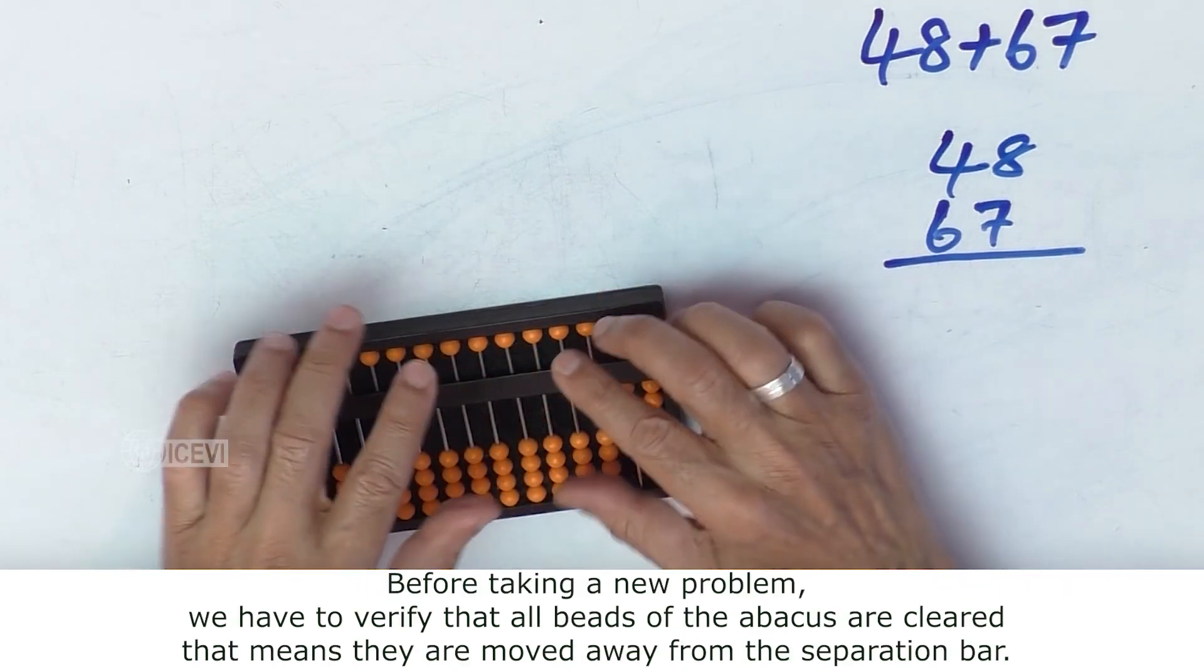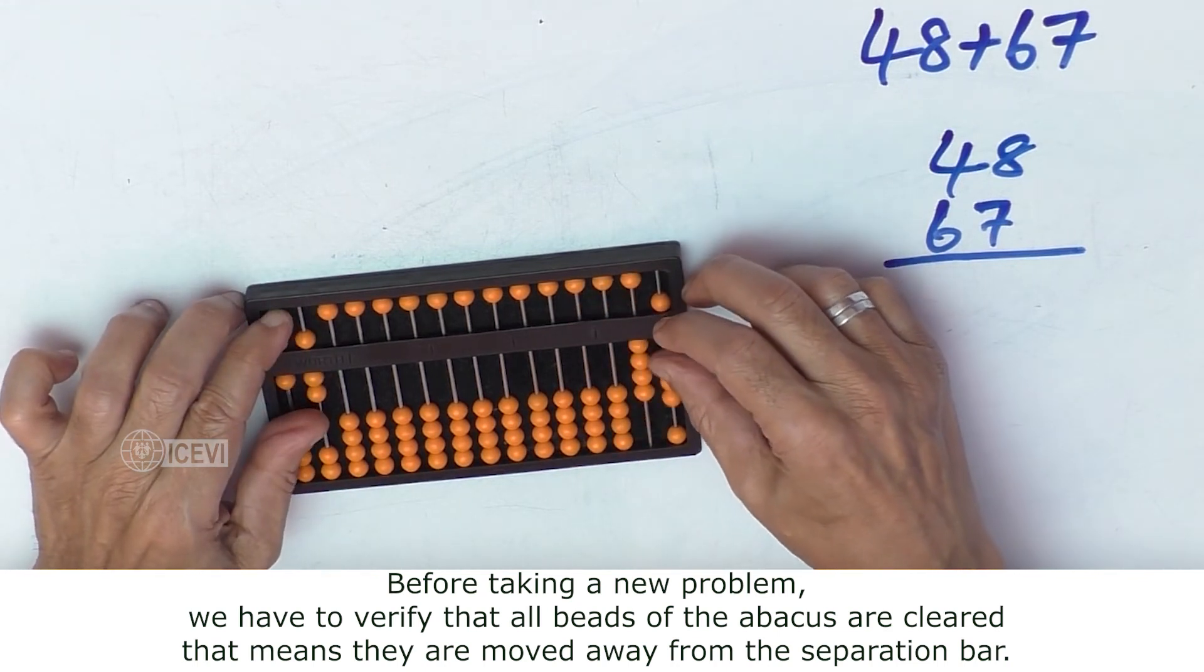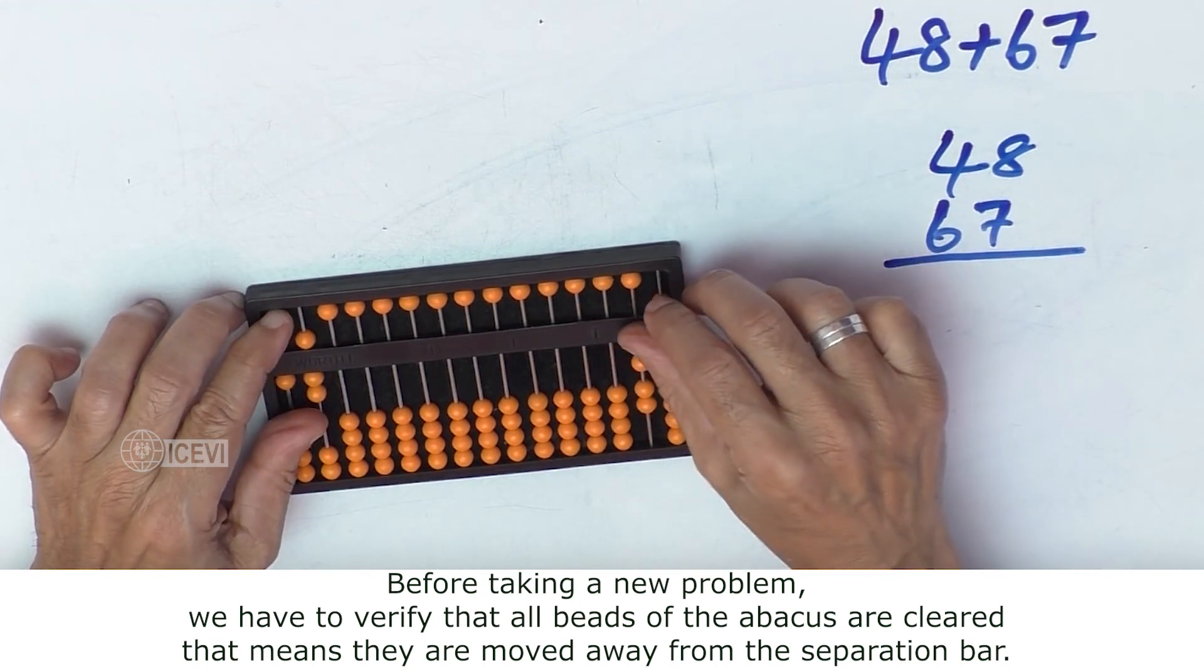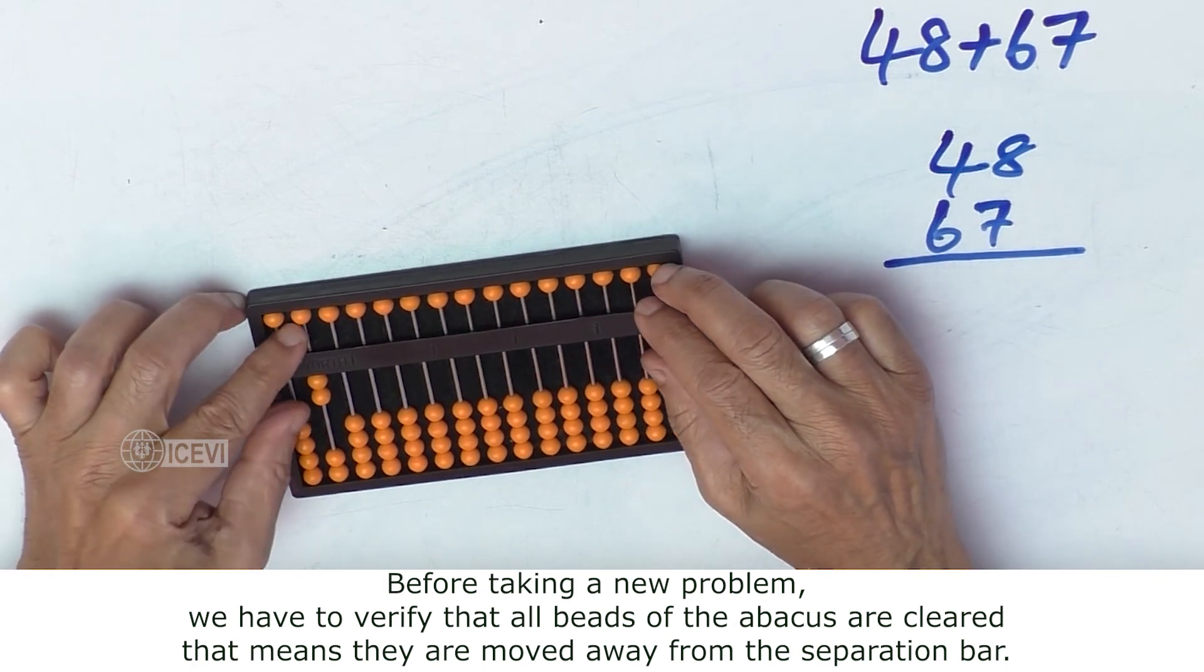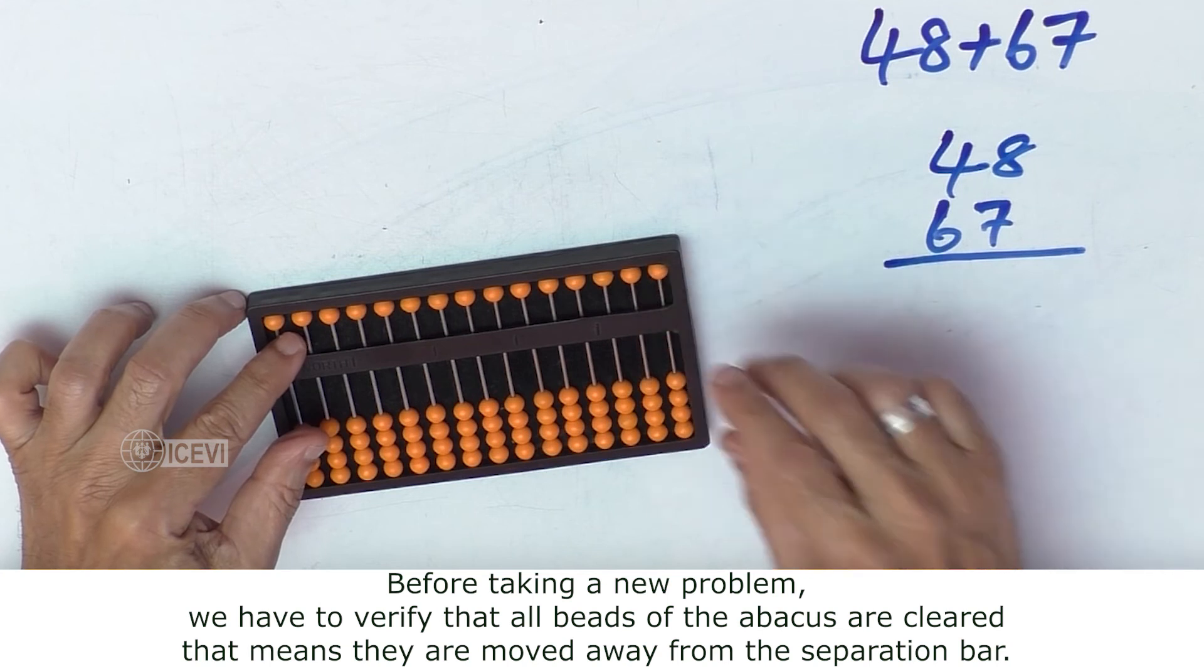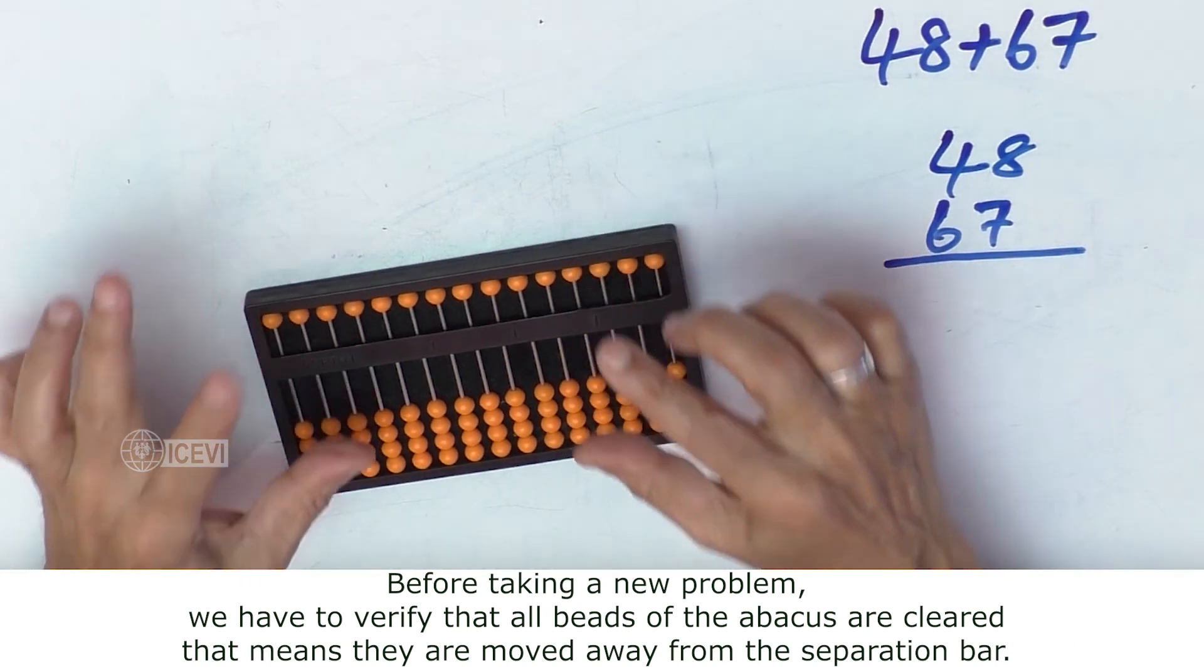Before taking a new problem, we have to verify that all beads of the abacus are cleared—that means they are moved away from the separation bar.